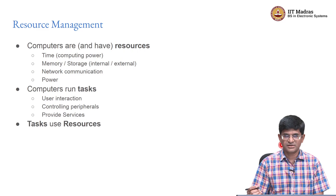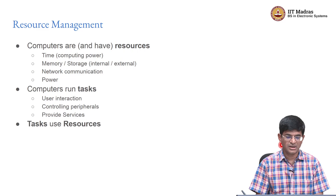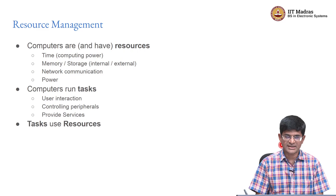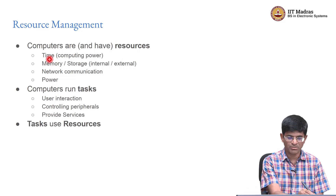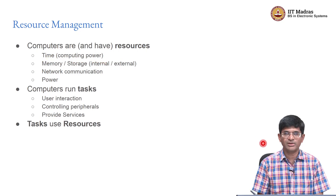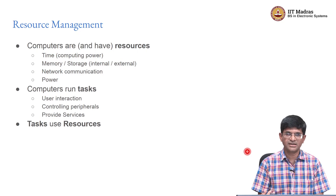The first thing we need to observe is that computers are resources and they also have resources that can be used. When I say that computers are resources, it means that we use them in order to accomplish certain tasks. In turn, computers have resources that need to be managed, and the most important of course is time — usually measured in terms of the number of clock cycles or instructions that a computer can allocate for a given task.